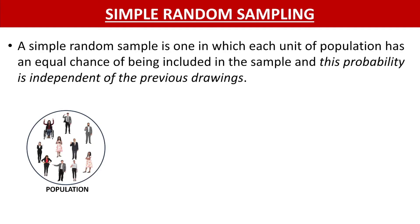Coming to simple random sampling: a simple random sample is one in which each unit of the population has an equal chance of being included in the sample. What sets it apart from random sampling is that the probability of selection in simple random sampling is independent of the previous drawings. Remember this — in simple random sampling, the probability is independent of the previous choice.